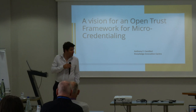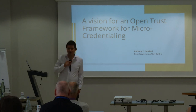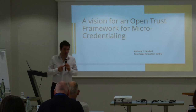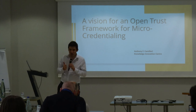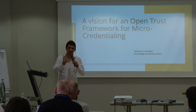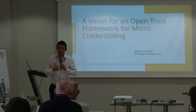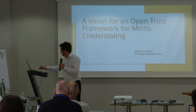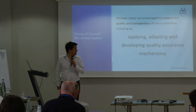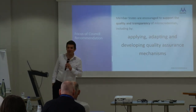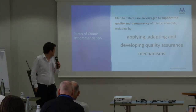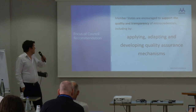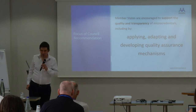What I'm going to be talking about is some theoretical ideas we've been playing with. One of the things we do at KIC is try and find niches where policy making hasn't been developed enough, and try to highlight and accelerate work on them. One of the things we've been spending an inordinate amount of time on lately is this line in the council recommendation on micro-credentials, which says that we're supposed to support the quality and transparency of micro-credentials by applying, adapting, and developing quality assurance mechanisms.